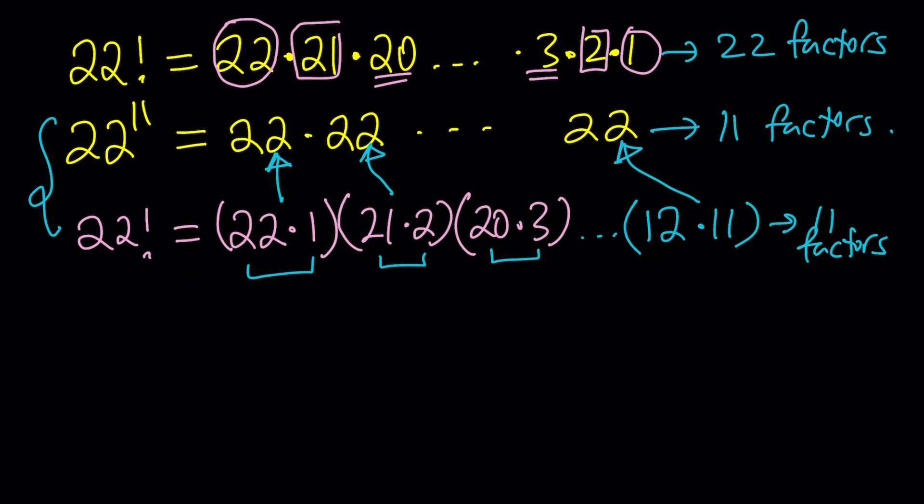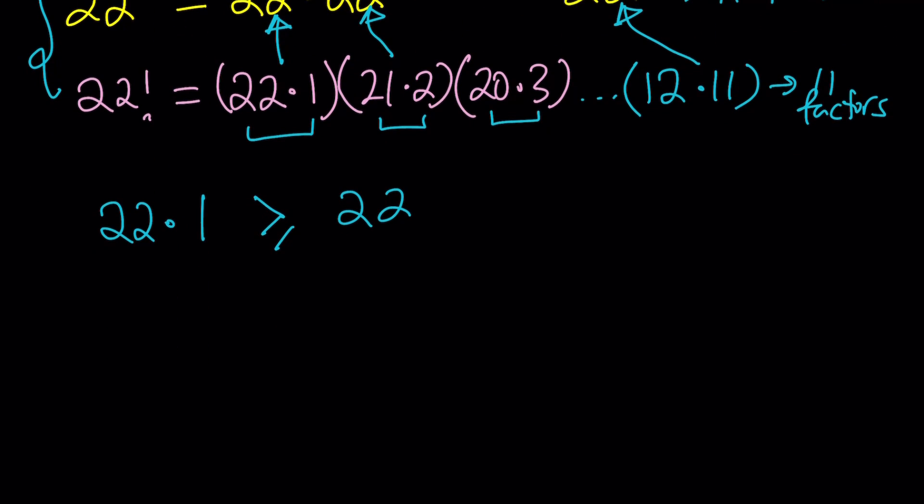So here's how it goes. 22 times 1 is 22 and that is greater than or equal to 22, correct? I can't just write greater because it's equal. But greater or equal to would be correct. 21 times 2, which is our second pair, is 42 and that's definitely greater than 22. And the next one is going to be 20 times 3. That's 60. It's also greater than 22. Continue in this pattern.